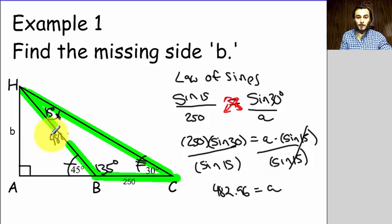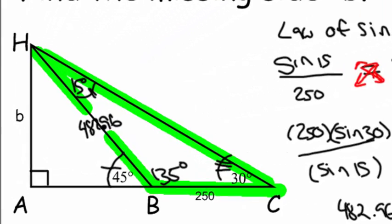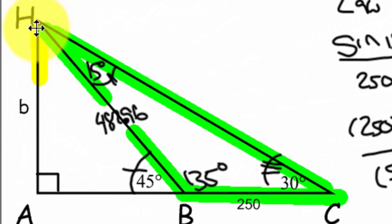482.96, right. Okay, so now where does that get us? Well, we still have to find the missing side B, right? That was the original task. So let's now focus on the right triangle. So let's go back to that, let's focus on the right triangle, this guy here.